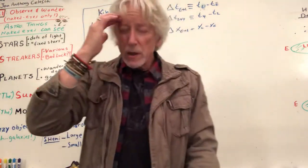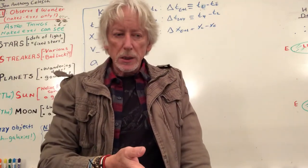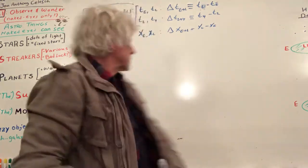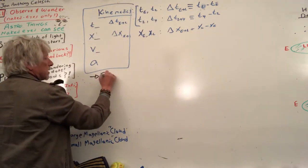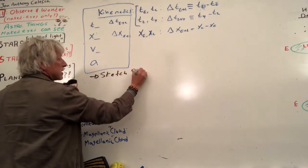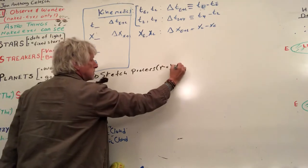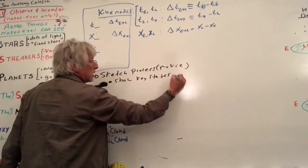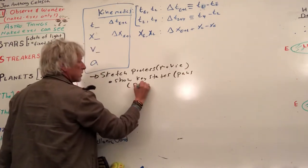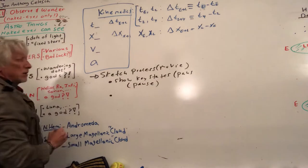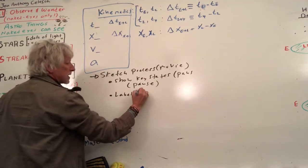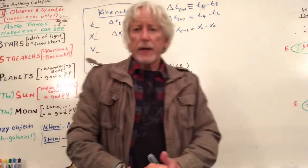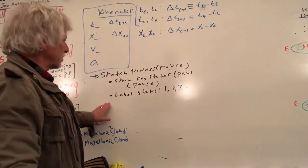We've got words that describe a process and our challenge is to draw a picture — sometimes it's drawn for us. We want to sketch the process or the movie, show the key states — that means you pause the video. We're going to label those instances or states one, two, three in sequence.